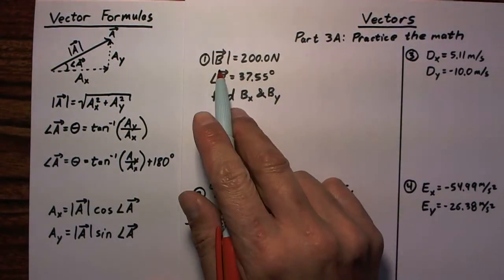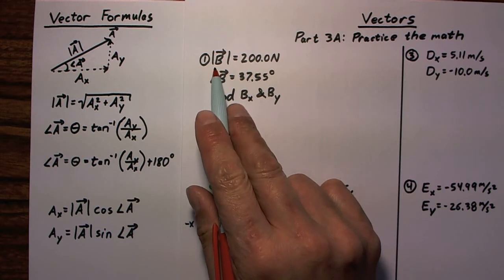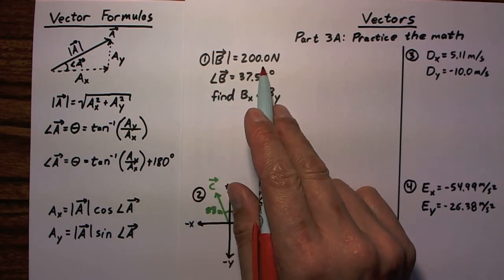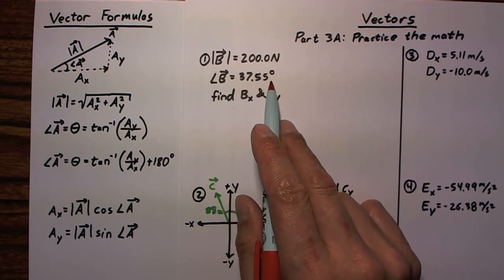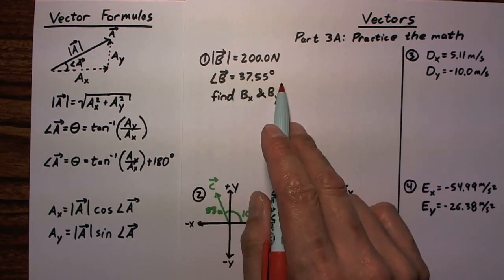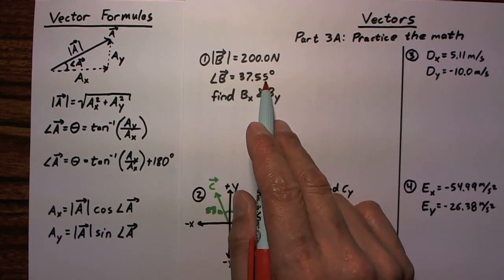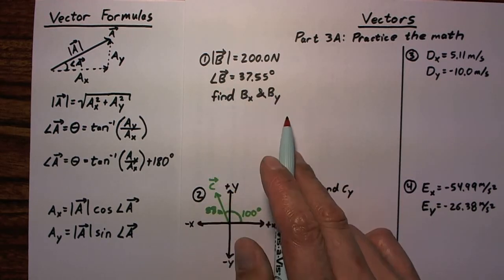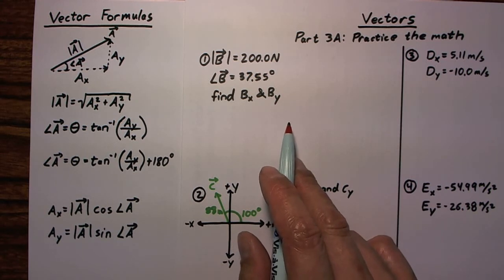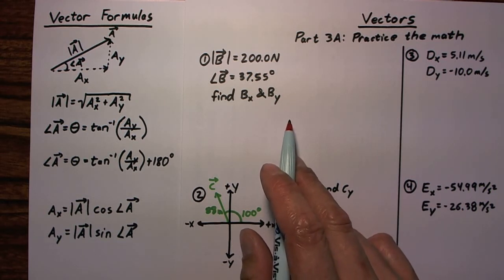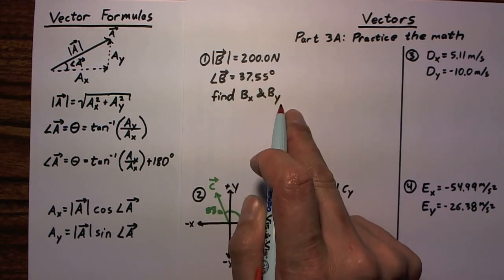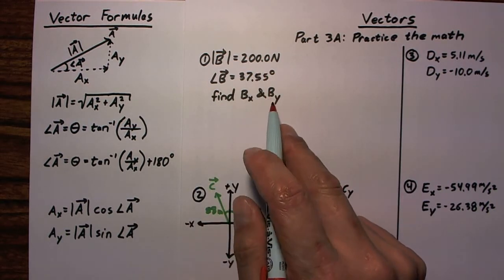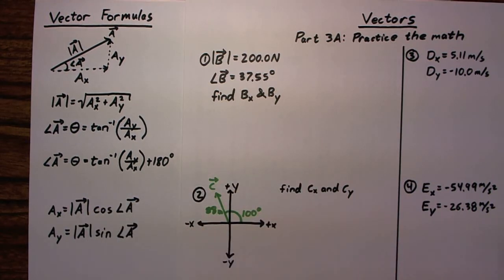Let's start with problem number one. We are given that the magnitude of some vector B is 200 newtons. The direction of this vector is 37.55 degrees — and since we're not given any reference point, it's safe to say that's 37.55 degrees rotating counterclockwise from the positive x-axis. Find Bx and By. So we're given magnitude and direction, and we need to find components.